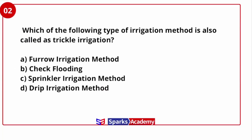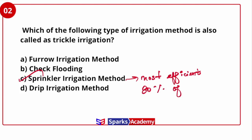The next question: which of the following types of irrigation method is also called trickle irrigation? Trickle irrigation is nothing but sprinkler irrigation. Sprinkler irrigation is the most efficient irrigation method — you can achieve up to 80% application efficiency. Kindly note this point: 80% efficiency can be achieved with sprinkler irrigation.